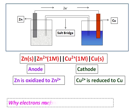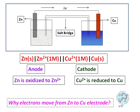But still, we have to answer the question: Why do electrons move from zinc to copper electrode and not the other way? So we will proceed further to the next video to understand why the movement of electrons is from zinc to copper and not from copper to zinc.